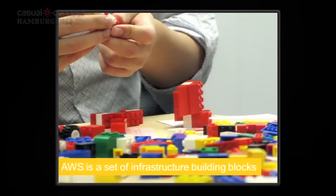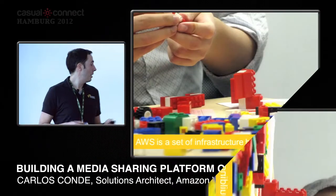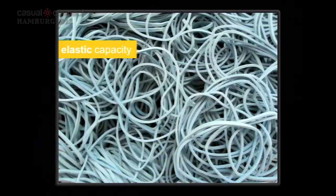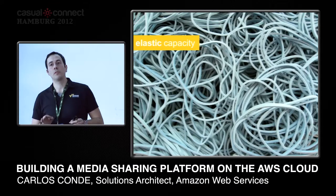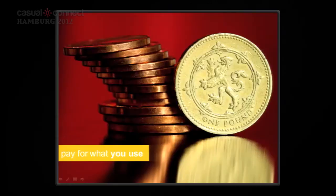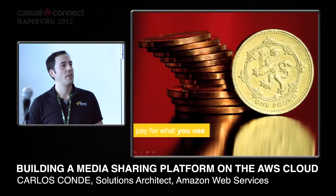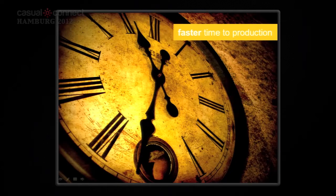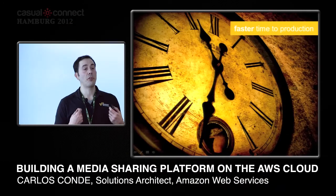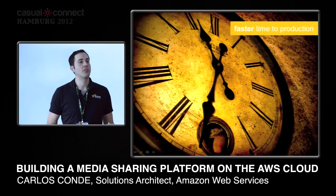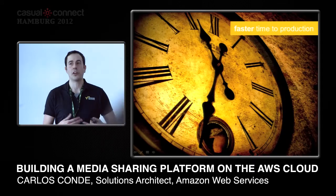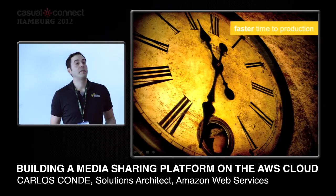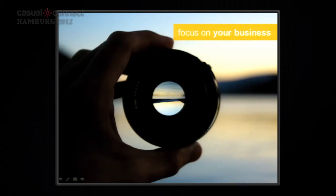Amazon Web Services is a set of infrastructure building blocks — you can build virtually any system using them. The key concept is elastic capacity: the Amazon platform adapts to your needs, you can scale up and, more importantly, scale down, which is extremely important for cost efficiency. You only pay for what you use with no upfront contract or fee. The main benefit is also faster time to market — you don't install machines, provision hardware, or do hardware administration. You want an instance, you go to the web interface, start it, and you have it in seconds. Focus on your business and creating great games and applications.